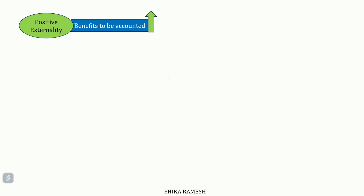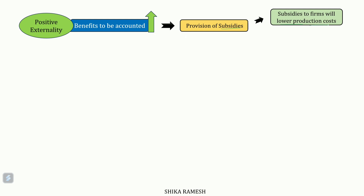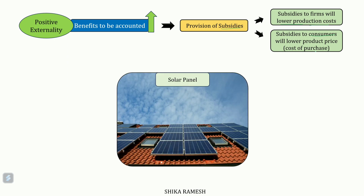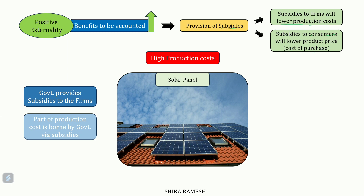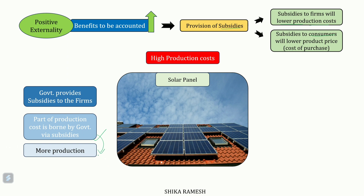On the other hand, if it is a positive externality, the benefits enjoyed by the society need to be increased, for which the government can provide subsidies either to the producer — thereby reducing their production costs — or to the consumers, thereby reducing the cost of purchase. For example, we know that the production of solar panels incurs high cost. If the government provides subsidies to the producers, their actual cost of production will decrease as a part of the cost is paid by the government, incentivizing them to produce more solar panels.